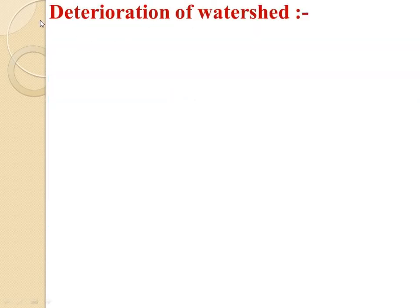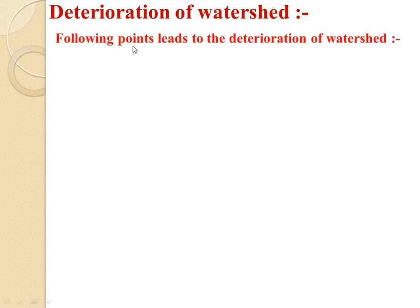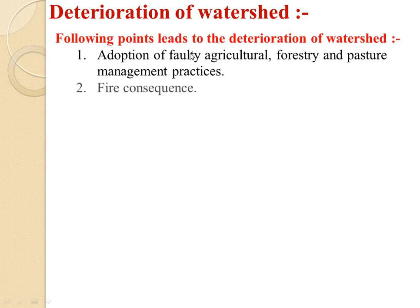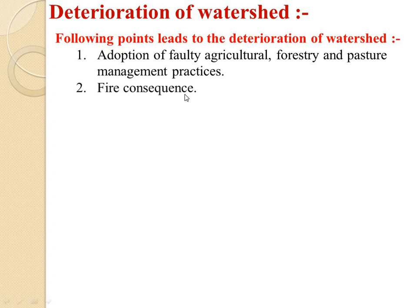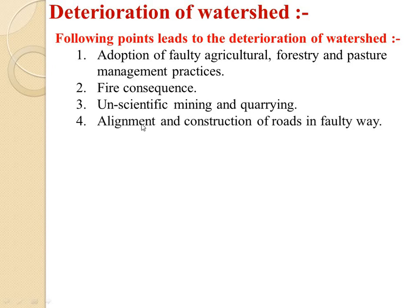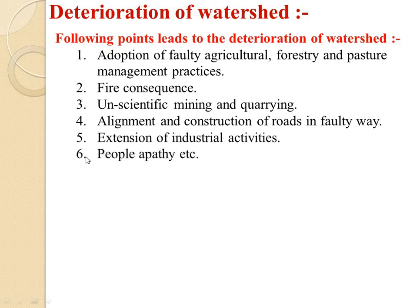Coming to the deterioration of watershed. The following points lead to the deterioration of watershed: first, adoption of faulty agriculture, forestry, and pasture management practices; then fire consequences; then unscientific mining and quarrying; then alignment and construction of roads in faulty ways; extension of industrial activities; and people's apathy.